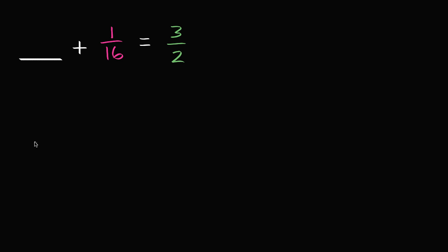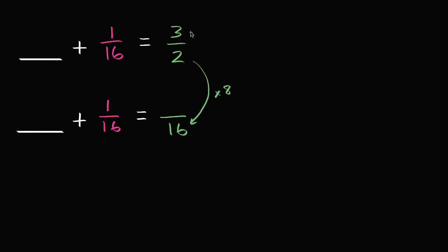So we're going to have blank plus 1/16 is equal to — let's write 3/2 as something over 16. To get our denominator from 2 to 16, we have to multiply by 8. So we have to multiply the numerator by 8 as well. 3 times 8 is going to be 24. Now at this point, you might be able to do it in your head: blank plus 1/16 is equal to 24/16.